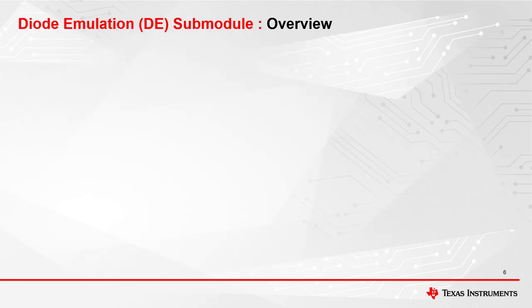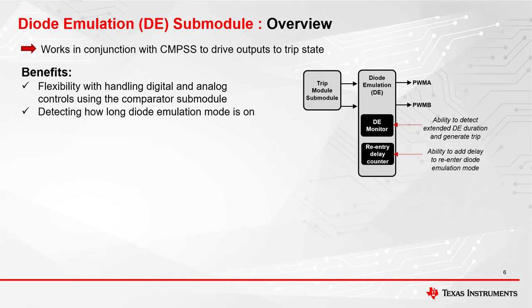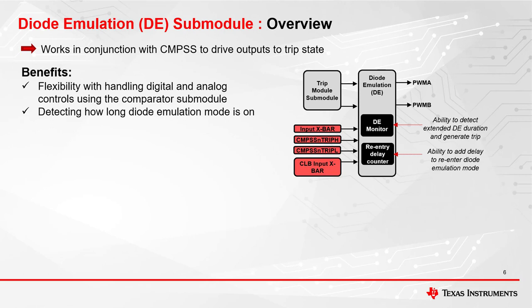Next, we will discuss the diode emulation submodule. One of the safety features added for Type 5 is diode emulation. The diode emulation submodule works in conjunction with the CMPSS by driving the output to a known state based on an event occurring on the input crossbar, CMPSS trip H or low signals, or the CLB input crossbar. Within the diode emulation submodule, there is a way to detect the duration when diode emulation is active and generate a trip from that if the diode emulation has been active for too long. There is also the ability to add a delay before re-entering diode emulation. An example of using the submodule would be detecting overcurrent scenarios and driving the PWM outputs to a safe state before resuming normal operation.